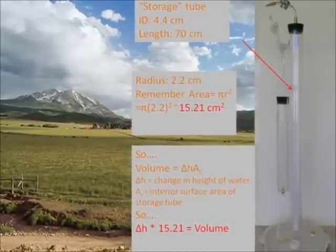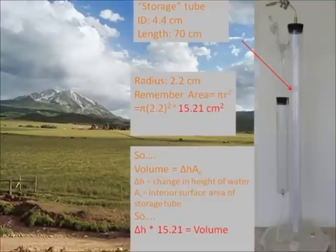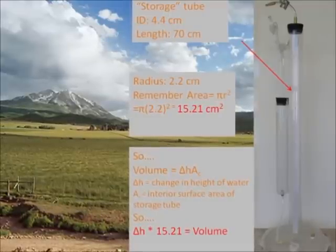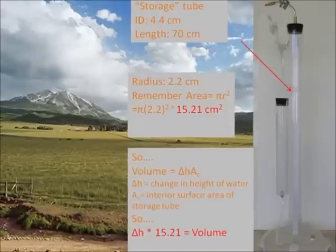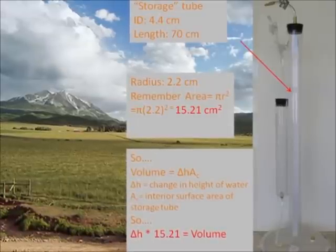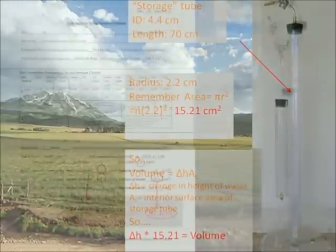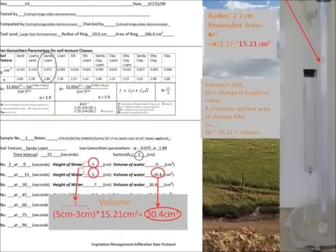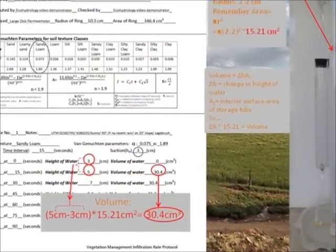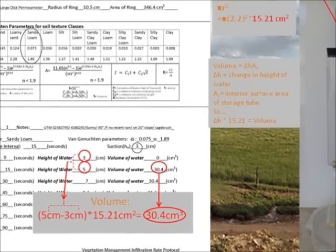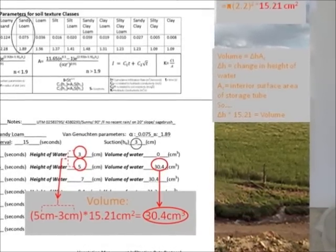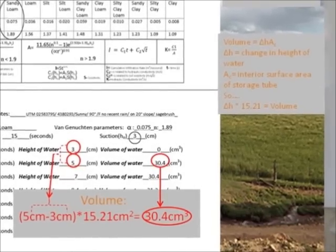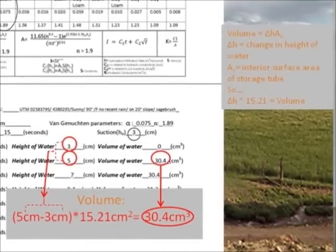So, the delta H, or the change in the height of water on the tube, is multiplied by 15.21 for the volumetric measurement. This would simply be the previous row's height of water, subtracted from the current row's height of water, multiplied by the interior surface area of the storage tube, or 15.21.